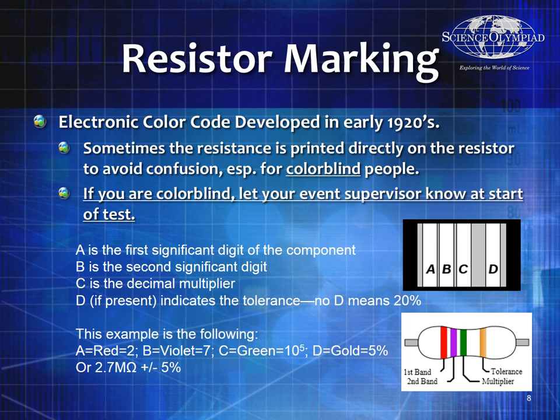In the example on the lower right: A is red, B is violet or purple, and C is green. That gives 2.7 times 10 to the 5th, or 2.7 megaohms. D being gold means it's plus or minus 5%. If D were silver, it would be plus or minus 10%.